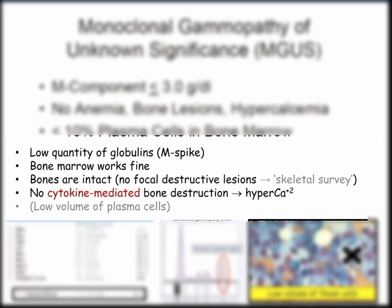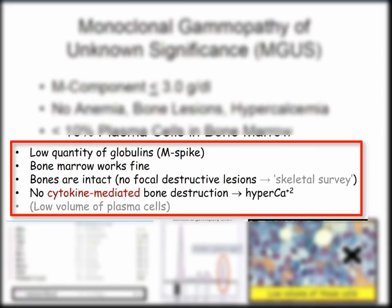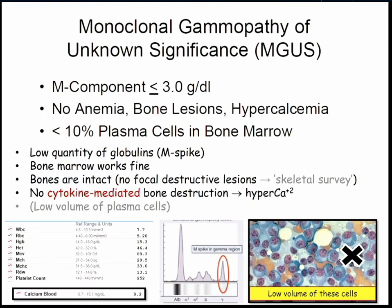That's on the slide, and here's the summary: low quantity on bone marrow, bones intact with no focal lesions. You'd order a skeletal survey if really concerned. No hypercalcemia — it's cytokine-mediated, and we'll cover that, because that's one of the important derivatives associated with myeloma. No cytokine-mediated bone destruction, no hypercalcemia. When you get somebody who has an M-spike, get a CBC to make sure they don't have anemia, get a calcium to check for hypercalcemia.